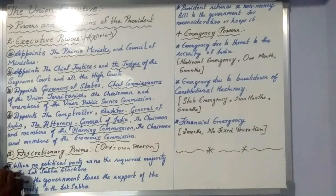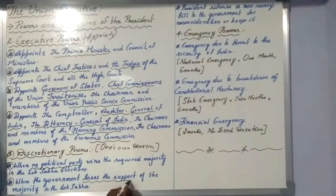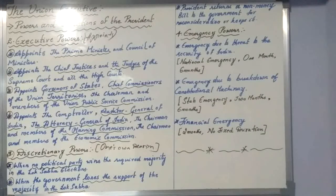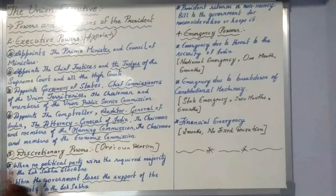The second discretionary power applies when the ruling government loses its majority in the Lok Sabha. The president is the one who calls for the house to be dissolved, and then we go for a mid-term election. That announcement — that the government gets dissolved and we go for a new mid-term election — is also under the control of the president.